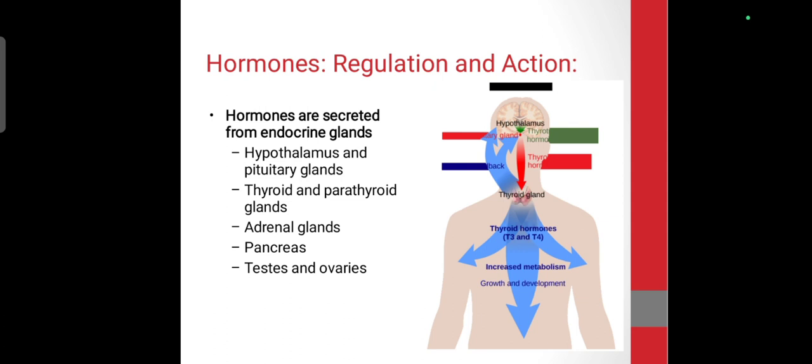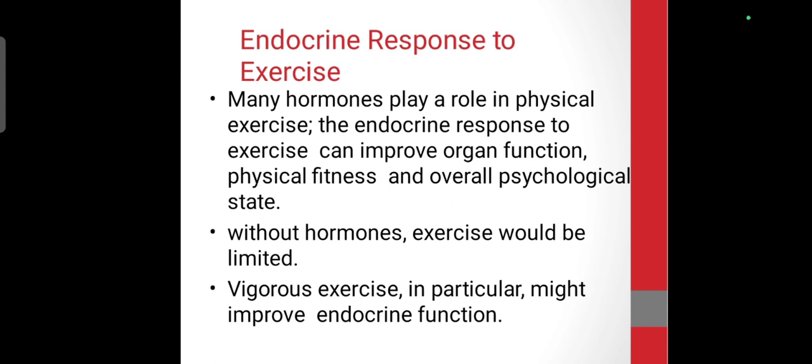Hormones regulation and action — endocrine glands include the hypothalamus, pituitary glands, thyroid, parathyroid glands, adrenal glands, pancreas, testes, and ovaries. The endocrine system plays a very important role in exercise — it automatically improves your physical fitness, your psychological state, and your organ function.